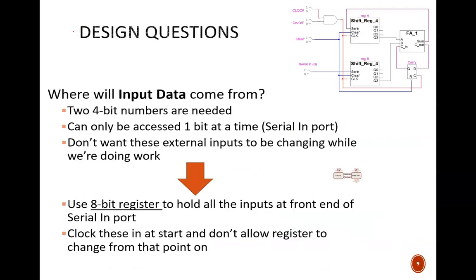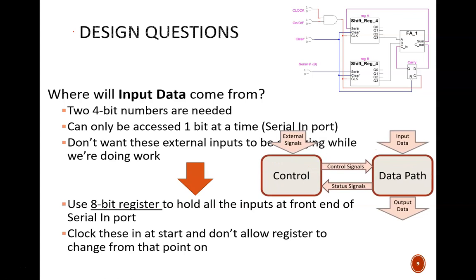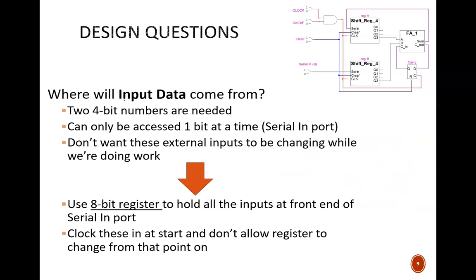The first arrow of the datapath control model we'll discuss is the input data. Where will it come from? Two 4-bit numbers are needed. With only one serial import available, these 8 bits must be passed in one bit at a time.